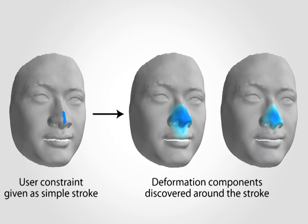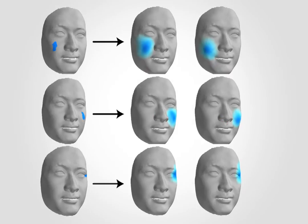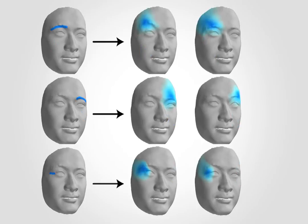Our method can optionally discover components in specific regions which are roughly marked by a simple binary mask. This allows artists to introduce semantic meaning into the very process of discovering an underlying basis of deformations. Here we show some examples.